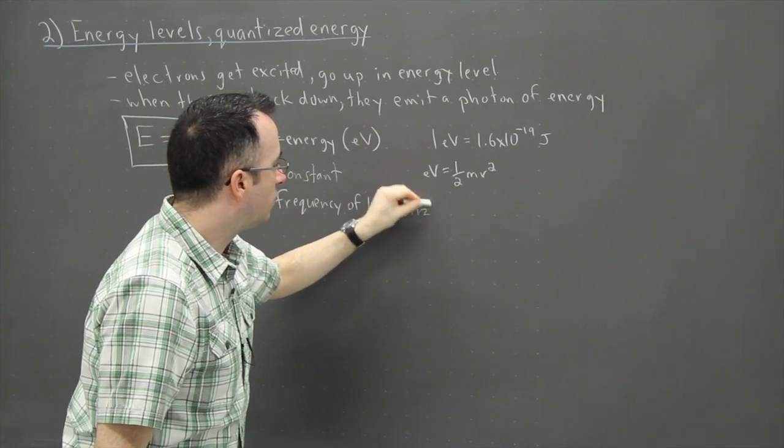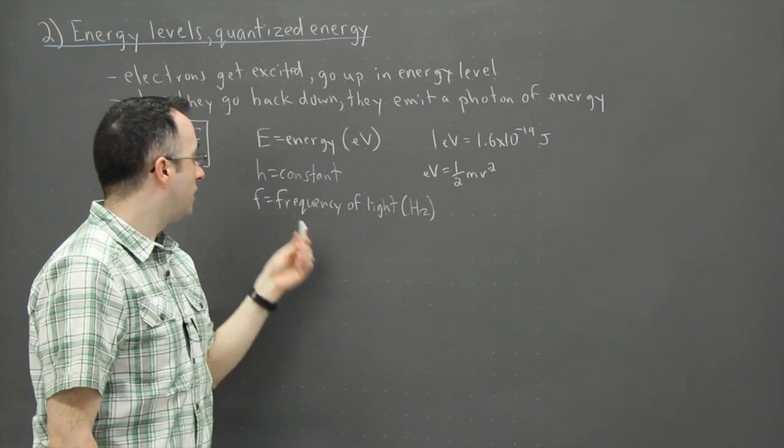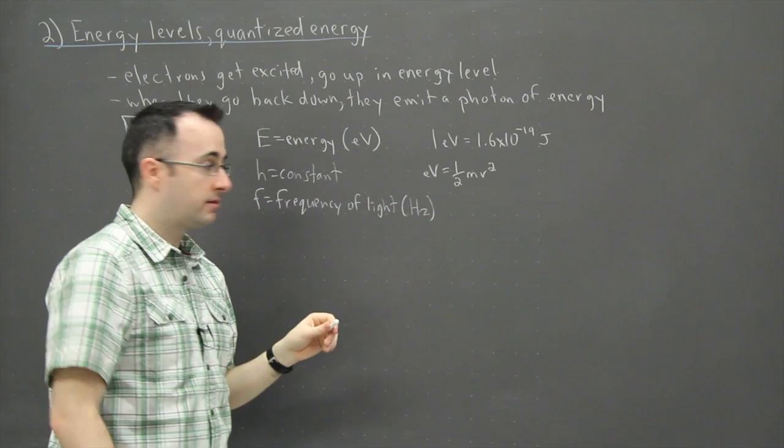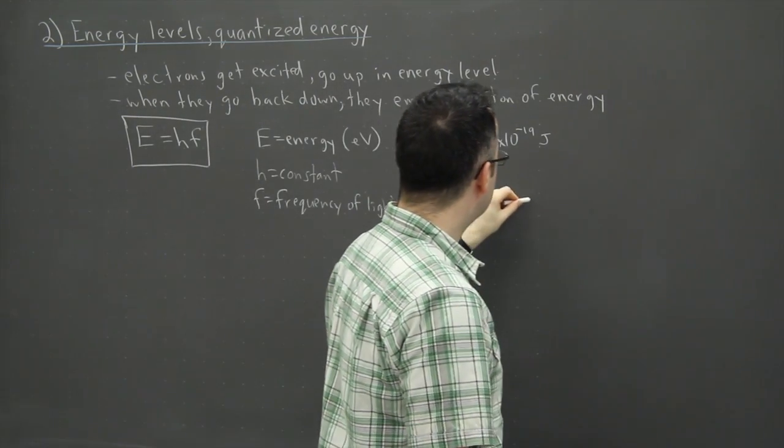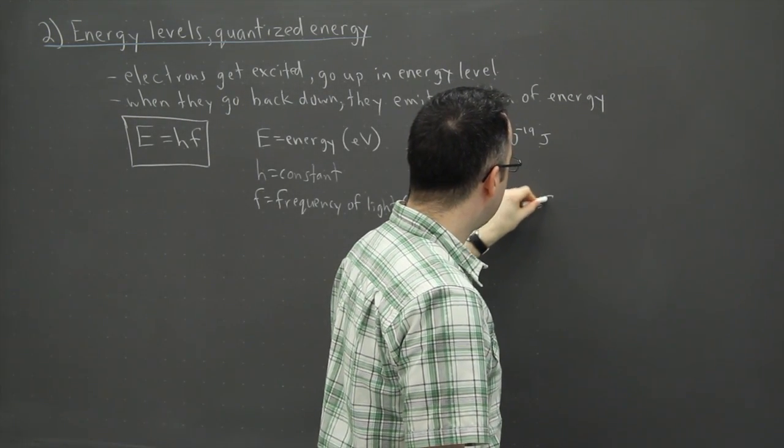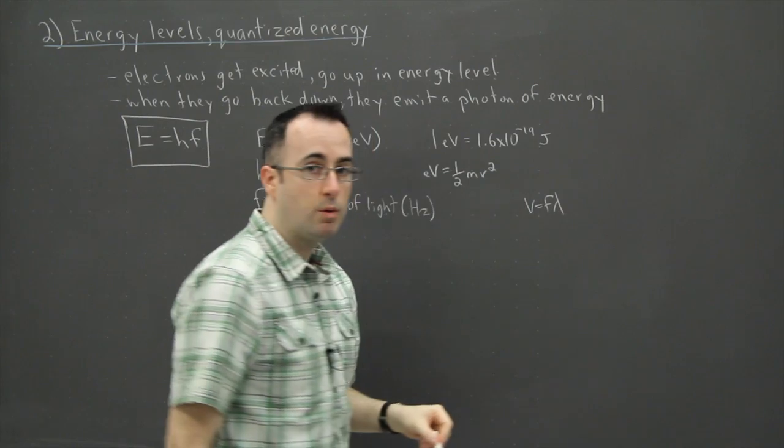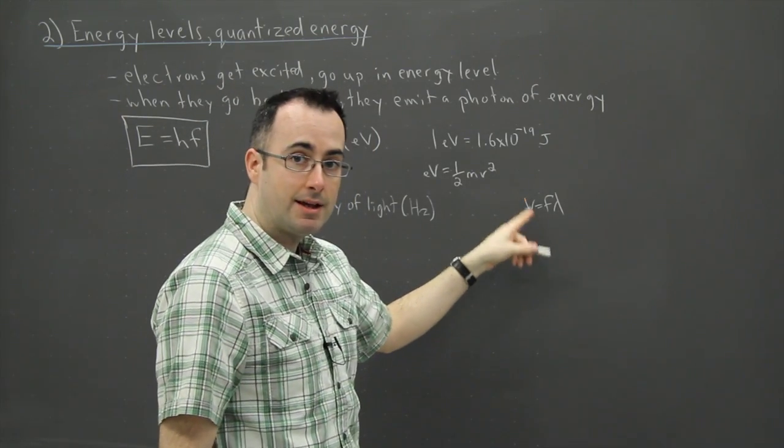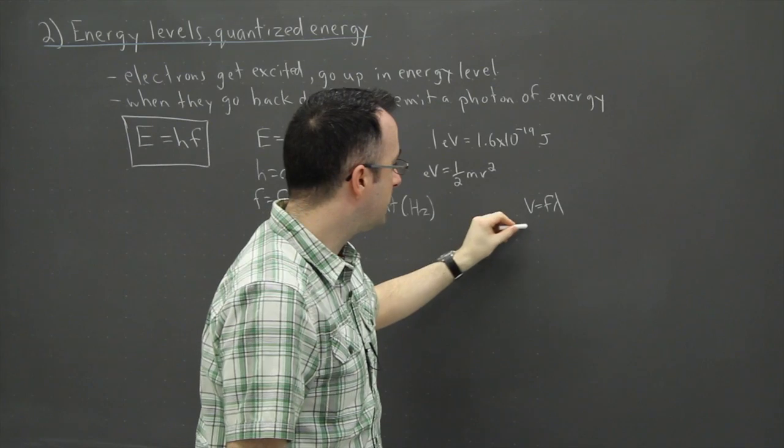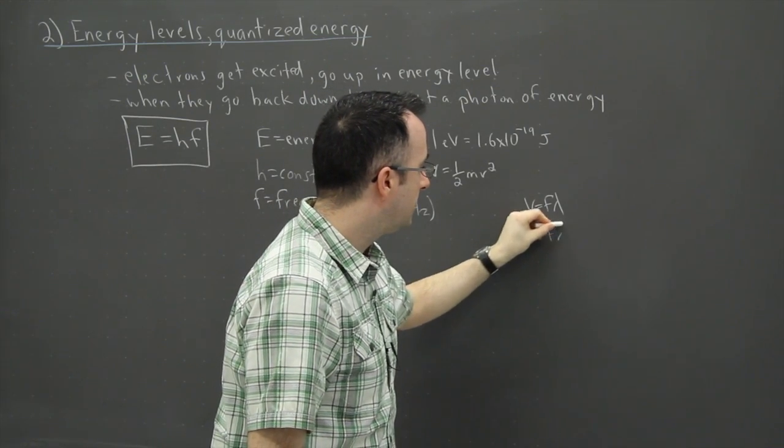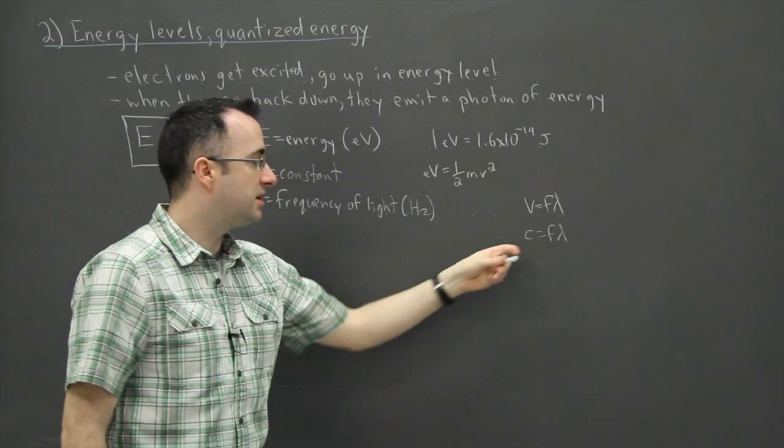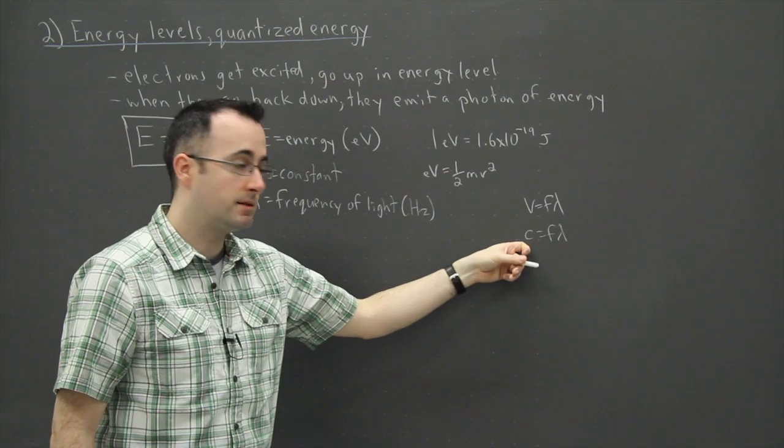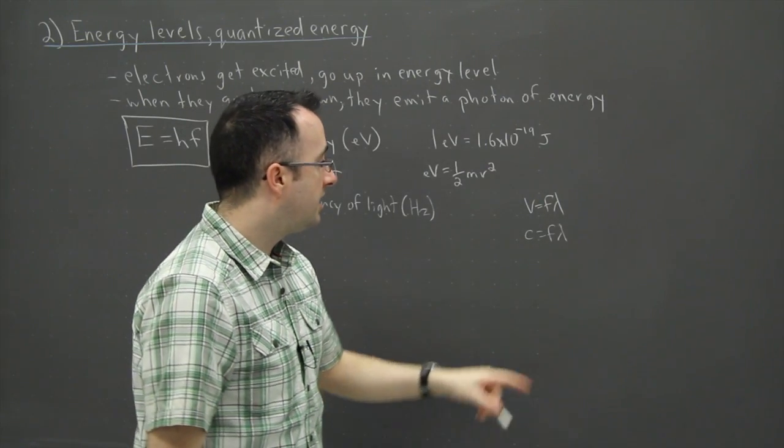Sometimes you want to convert that to a wavelength, so don't forget about this equation: V equals F lambda. That's the wave equation from topic 4, but if it's light, V is the speed of light, so it's C equals F lambda. Remember the speed of light is 3 times 10 to the 8 meters per second.